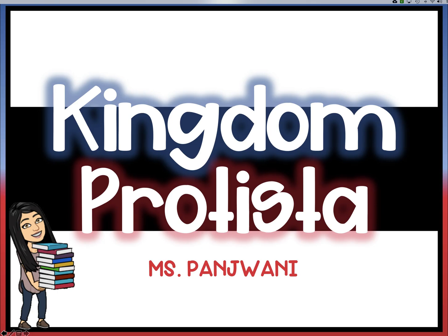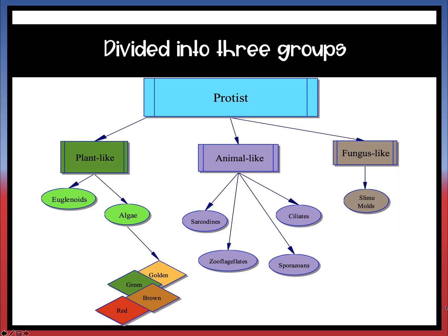Today we will talk about the protista kingdom. Protists are divided into three groups: the plant-like protists, the animal-like protists, and the fungus-like protists. As I've said before in the classification unit, protists are like the hodgepodge — anything that didn't fit in plants, animals, bacteria, or fungus got grouped into this. So we're going to dive into the different types of protists now.